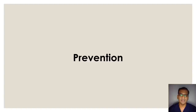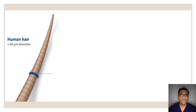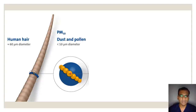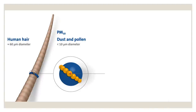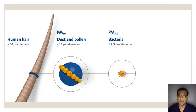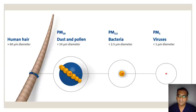The first step in successfully preventing this disease is to understand what is causing it. Let us first size up our enemy. A human hair is about 60 micrometers in diameter. Dust or pollen on hair is about 10 micrometers in diameter. Bacteria is about 2 micrometers in diameter. On top of the bacteria is a virus — most often less than one micrometer in diameter.